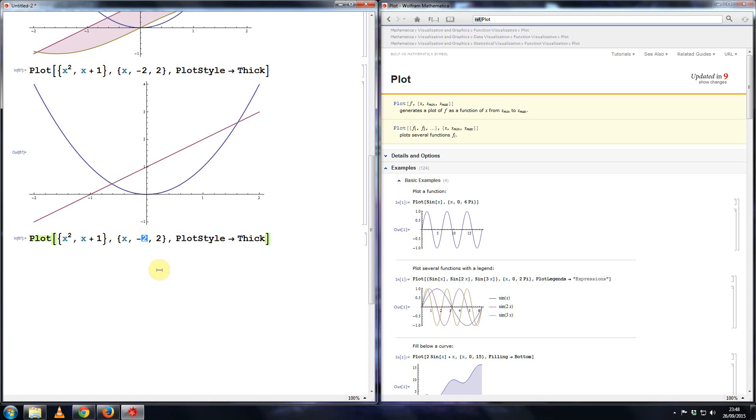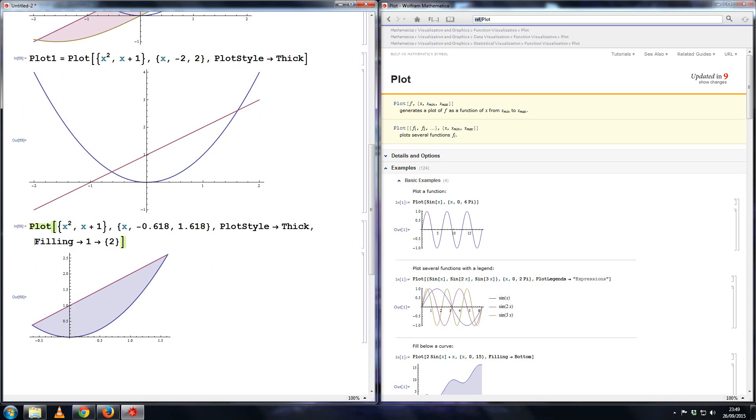And redo the plot. But this time only plot it in between where you want the filling to be. So I want it from this point, which I happen to know is minus 0.618. And the x coordinate at this point is 1.618. Okay, so you solve this equation. That's what you get as the solutions. And on this one, I'll say filling from the first to the second. Okay, so that produces something like this. Now you can combine these two plots together by using the show function. So what I'll do is I'll name this one plot one.